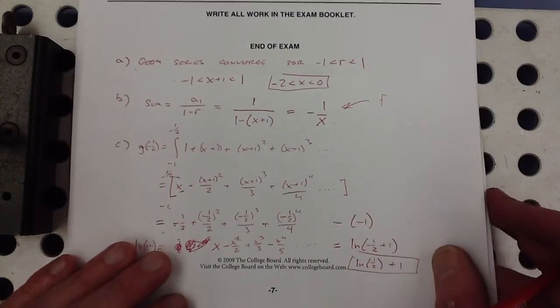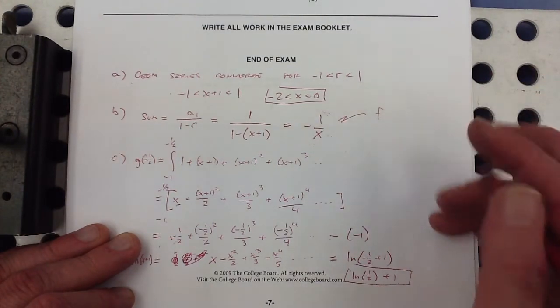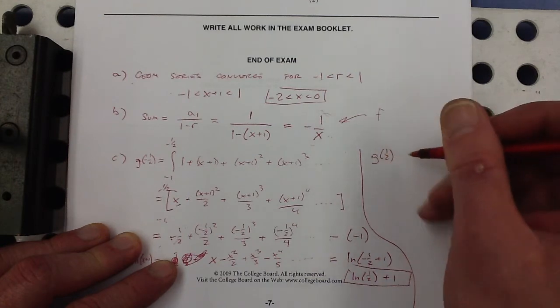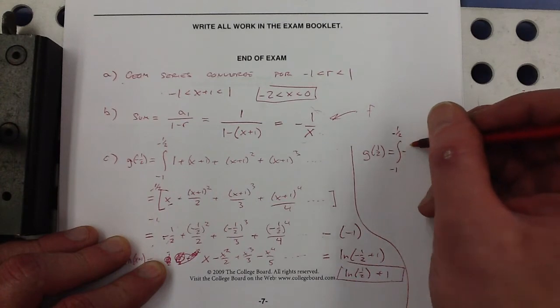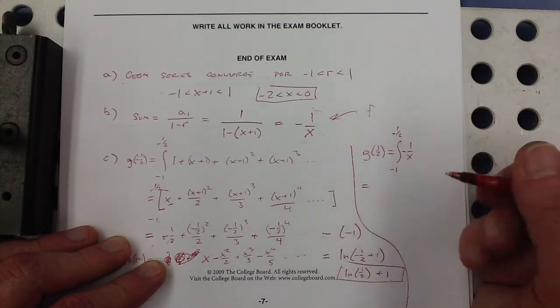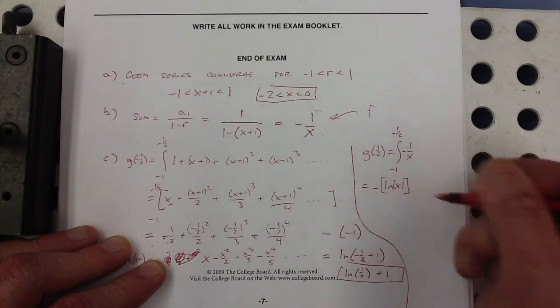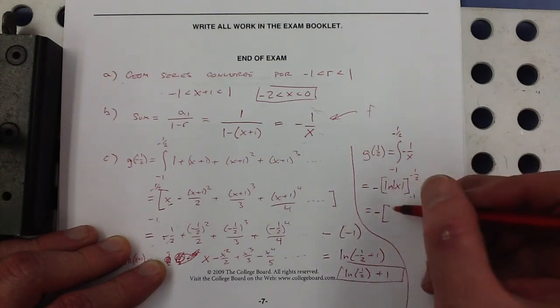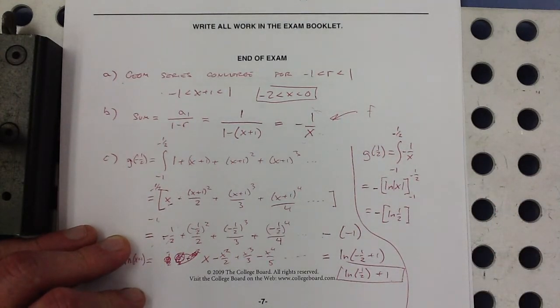So that's one way to get there. The other way, I think, would have been to recognize that this is the f function. So if this is f, then we were talking about here, this is the other way of doing this part, that g of negative 1 half is equal to the antiderivative from negative 1 to negative 1 half of negative 1 over x. And the negative can go to the outside. So that's equal to the negative natural log absolute value x from negative 1 to negative 1 half, which is equal to negative natural log of 1 half.